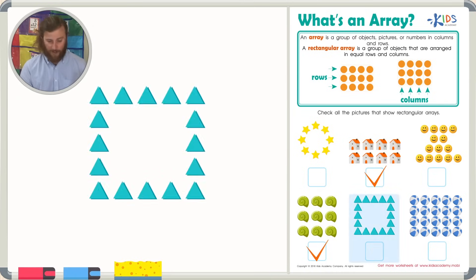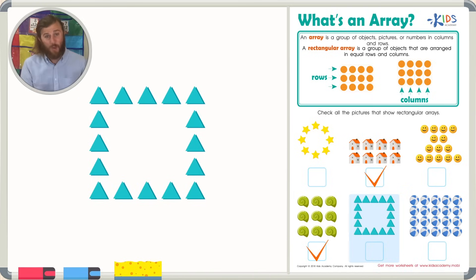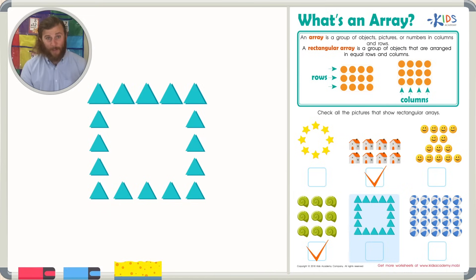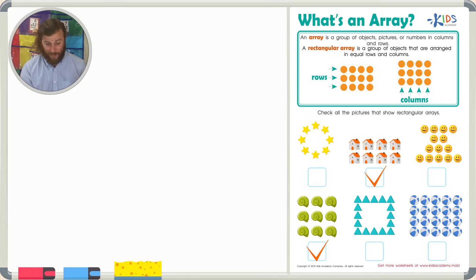Let's look at our next picture. Although it does look like a square or a rectangle, it has nothing filled in in the middle — it's completely blank. If we count the number in the first row, there are five. But if we look at the second row, we can see there are just two. So, this is not an array.